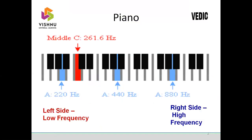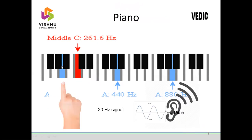Let us consider a piano having 88 keys. All the left-hand keys generate low frequency signals. Similarly, right side keys generate high frequency signals. In the piano, keys are arranged from low frequency to high frequency. Let us see what is the meaning of frequency. Imagine that you are pressing a key on the left-hand side — that is a low frequency signal. If you press the left side key, it could generate a 30 hertz low frequency signal. This signal has 30 cycles per second, so you will hear the same kind of signal 30 times in a second. You could hear a low pitch sound — a simple sine wave.